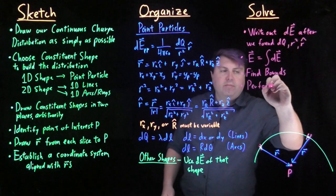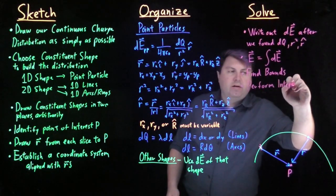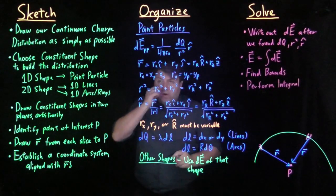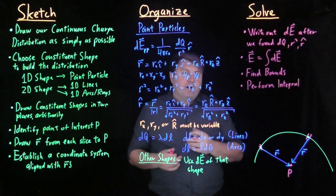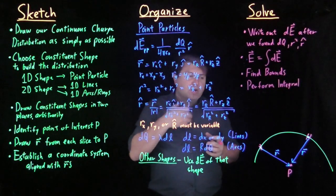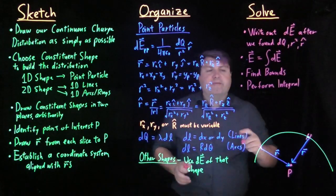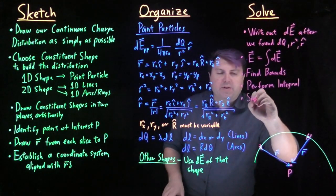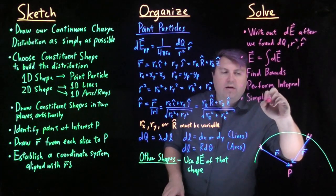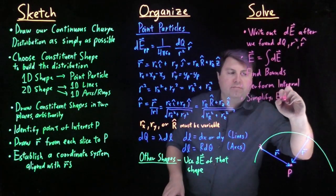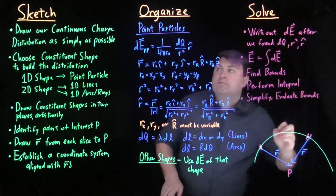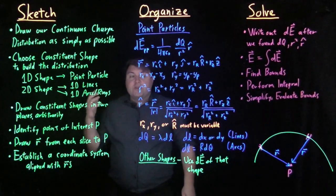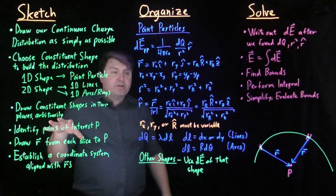When we do that, we perform the integral. We look it up in a chart, we ask a computer program to do it for us, we look it up in a table, or we can actually do the integral if absolutely necessary. And then we use algebra to simplify and evaluate bounds.